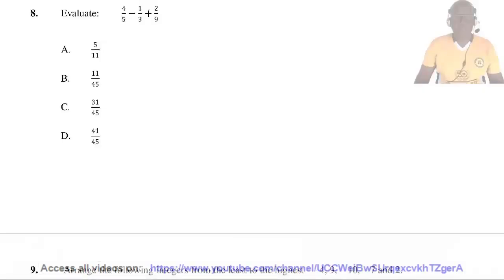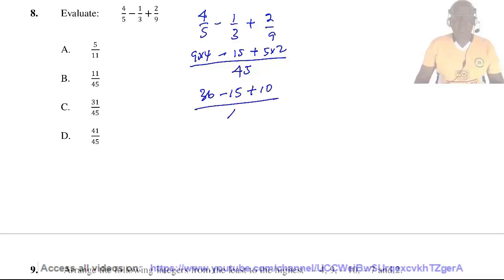Question 8. Evaluate 4/5 minus 1/3 plus 2/9. The LCM of 5, 3, and 9 is 45. 5 goes into 45 nine times 4, so 36. 3 goes into 45 fifteen times 1, minus 15. 9 goes into 45 five times 2, plus 10. So 36 minus 15 plus 10 over 45, which equals 31 over 45. So the answer is C.